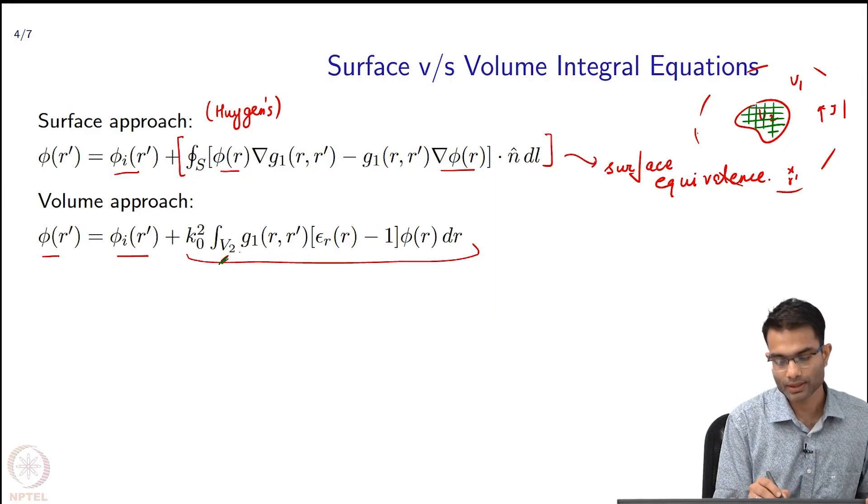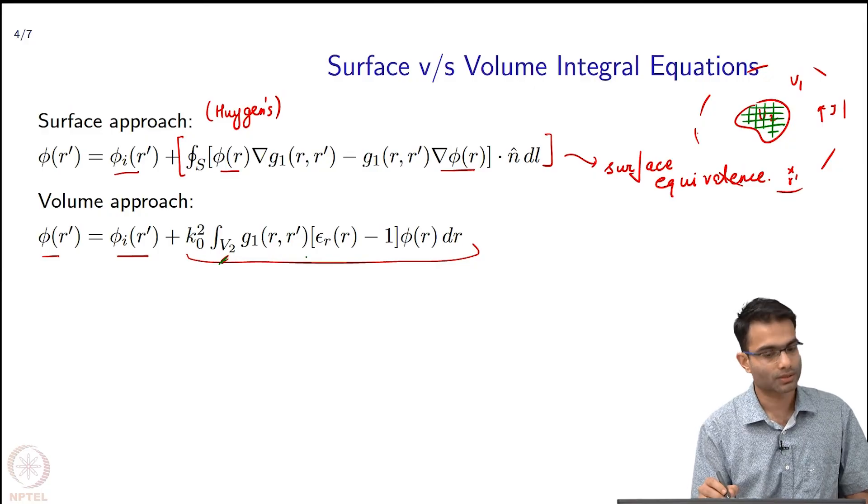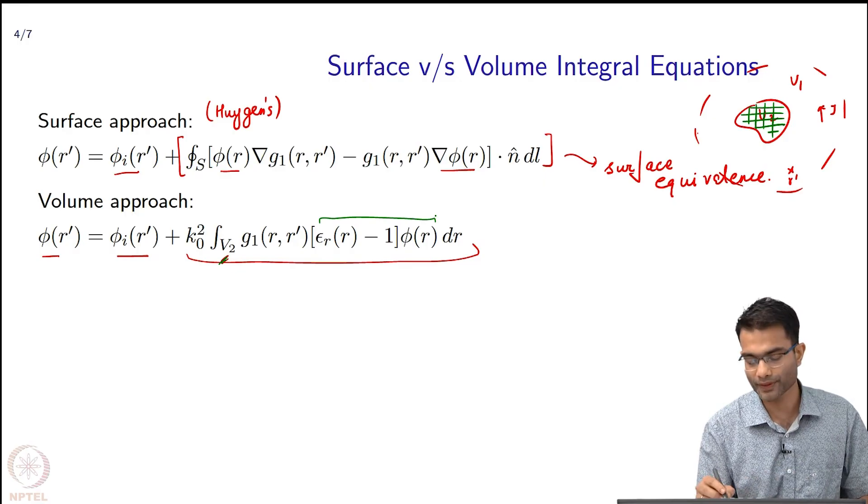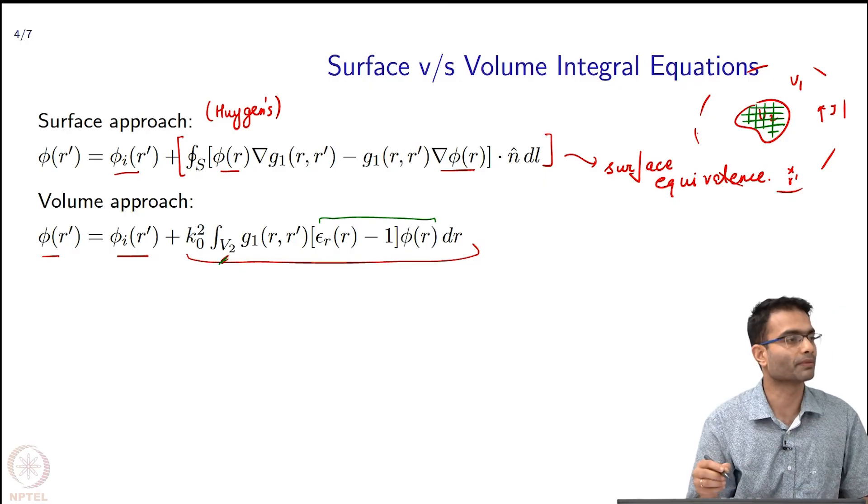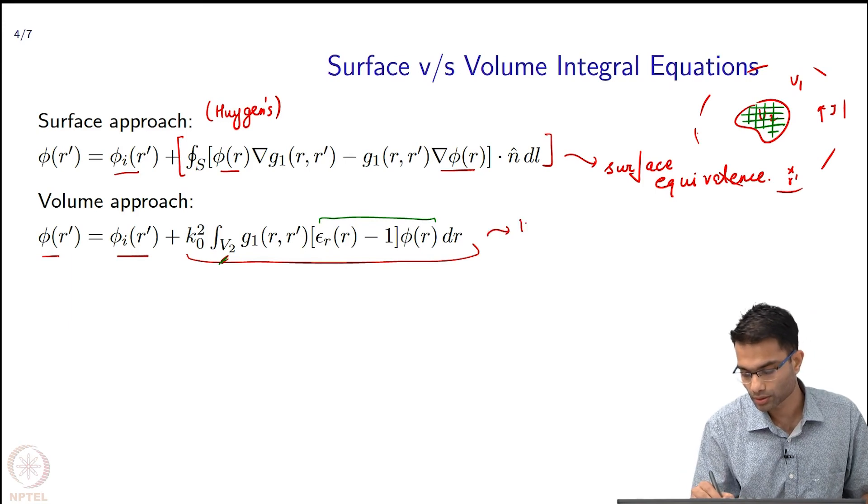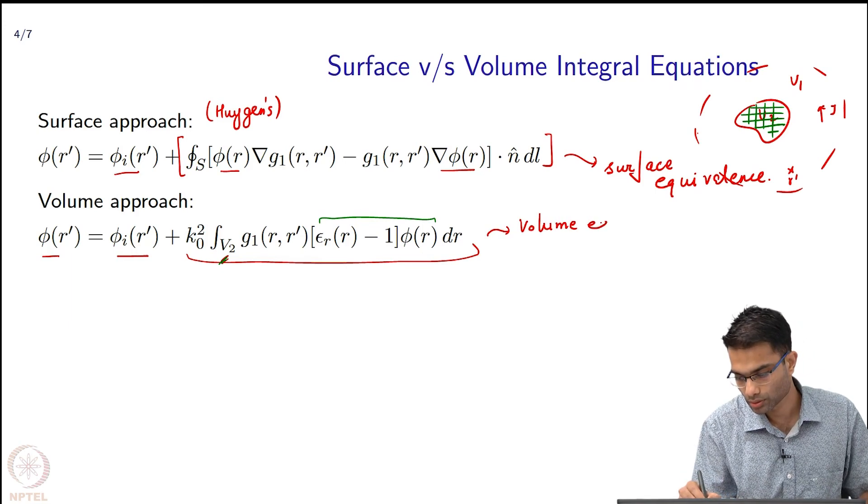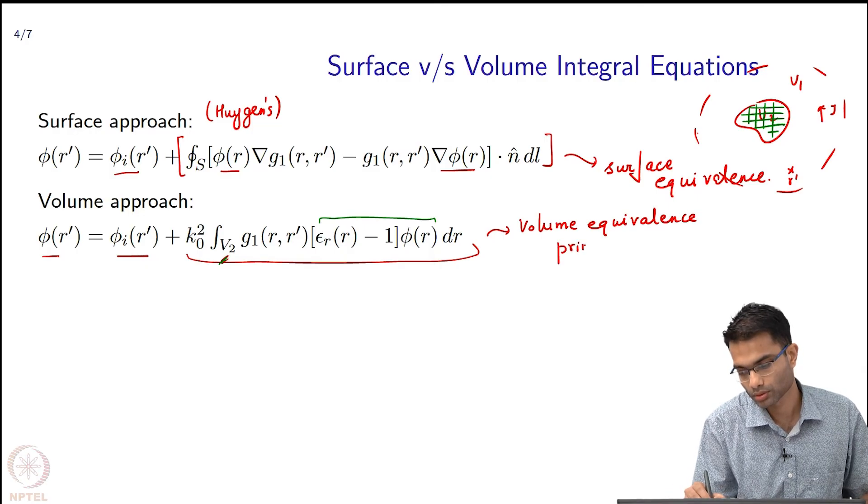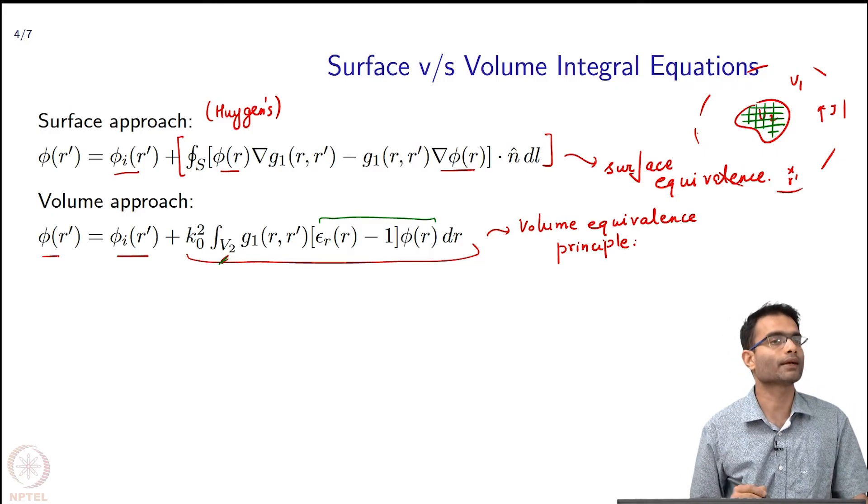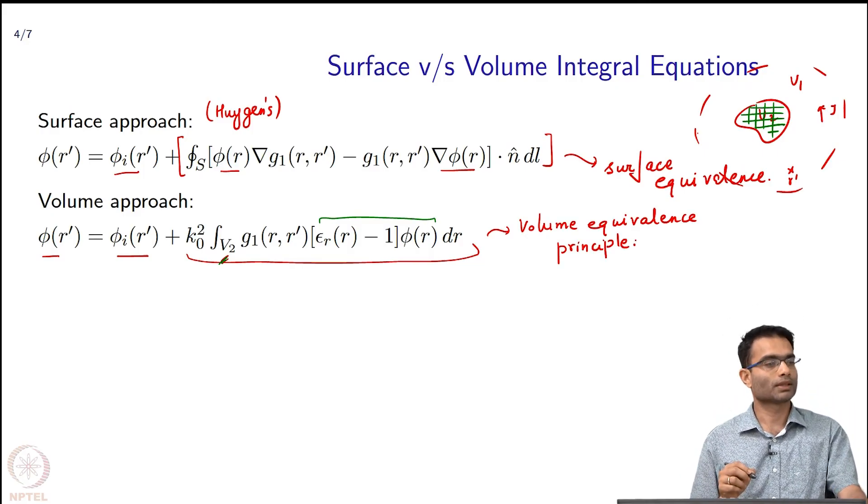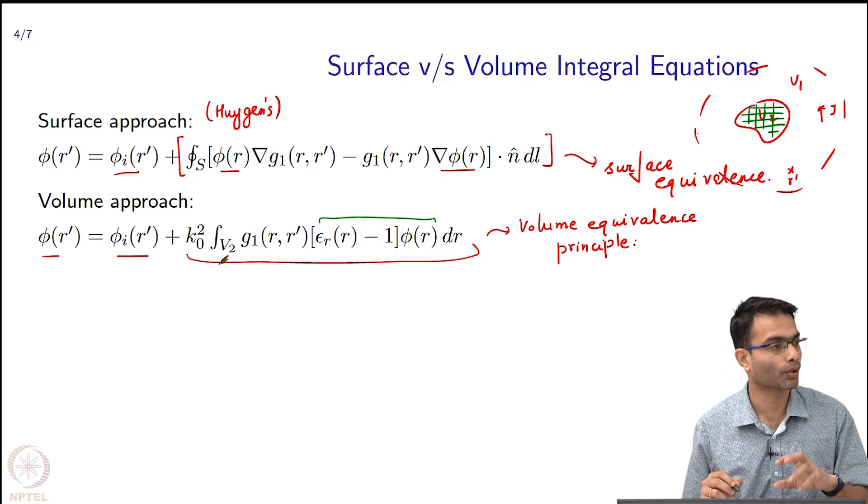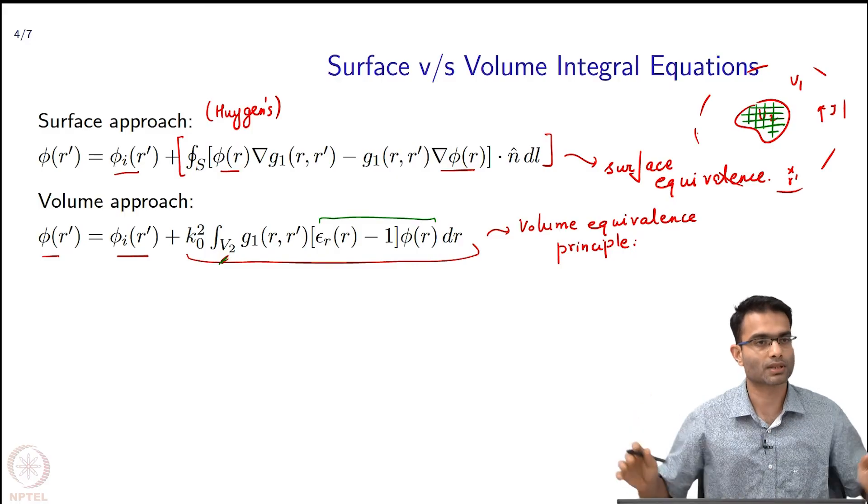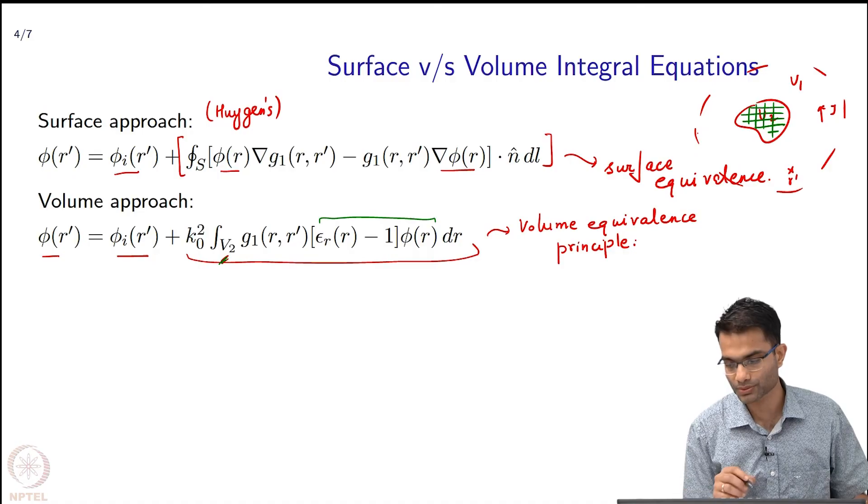This integral is saying sum over all of these currents - what is the current strength over here. This is the perfect example of volume equivalence principle which we had studied earlier. When we look at antenna problems later on in the course, the reason why this is called an equivalent volume current will become clear, but you can see that there is something in the volume which is being summed over. It is a volume equivalence principle that is used over here.